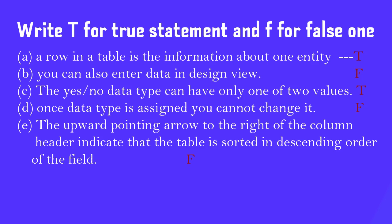C: The yes/no data type can have only one of two values - True. D: Once data type is assigned, you can't change it - False. E: The upward pointing arrow to the right of the column header indicates that the table is sorted in descending order of the field - False.